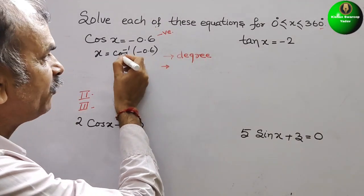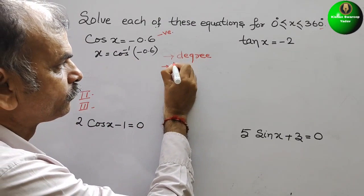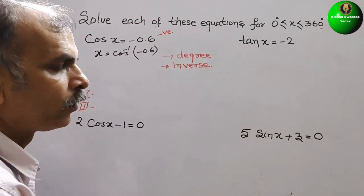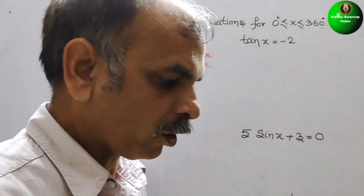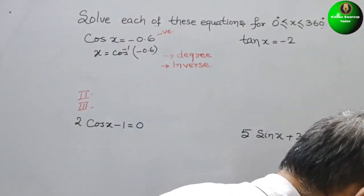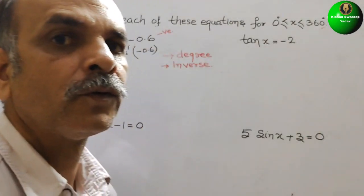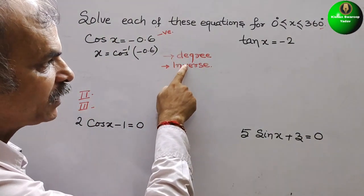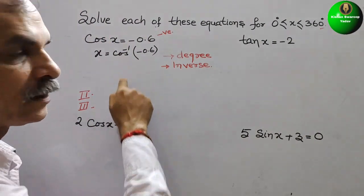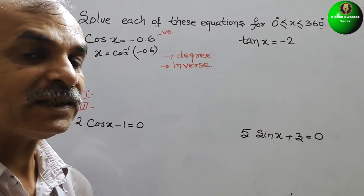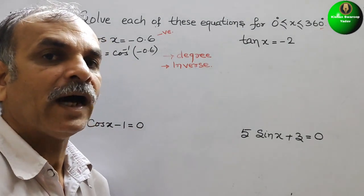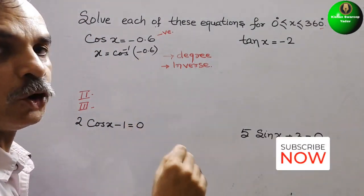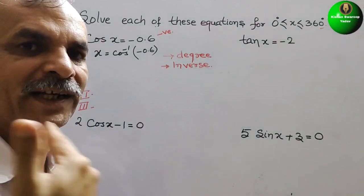Second, we have to select inverse. After selection of inverse, we press cos inverse. After pressing cos inverse, a bracket will open. In that bracket, we have to write -0.6. We will get our degree.